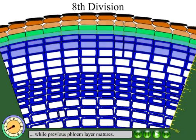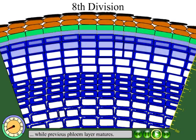In the eighth division, the final layer of xylem mother cells are formed, while previous phloem and xylem layers mature.